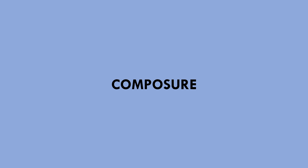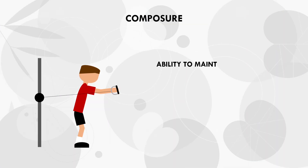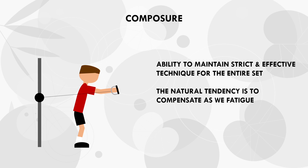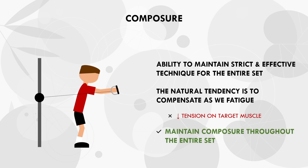The next technique consideration for hypertrophy training is lifting composure. This is a difficult phenomenon to define, but it generally refers to the ability to maintain strict and effective technique for the entire duration of each set. As we know, as we near failure towards the end of a set, the tendency is to compensate by reducing strictness, cutting range of motion, or speeding up the tempo. Ideally, we don't want any compensation in technique for the entire set, especially for the last few reps, as doing so will take tension off the target muscle and redistribute it to other muscles and joints.